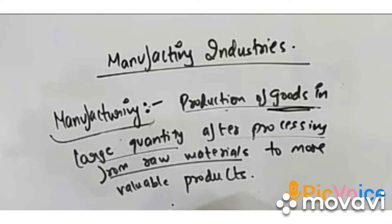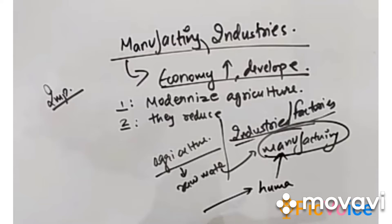People employed in secondary activities manufacture primary material into finished goods. The economic strength of a country is measured by the development of manufacturing industries. When we process agriculture produce in a factory — for example, flour is made from wheat — it becomes more valuable and more useful. Manufacturing economy ko develop karti hai, usko boost karti hai.